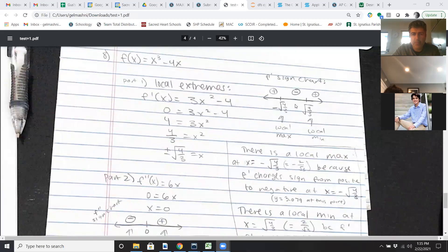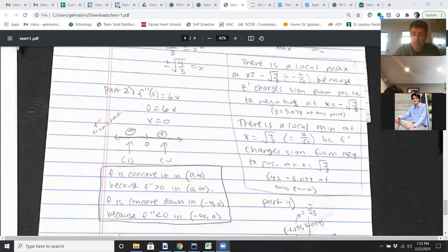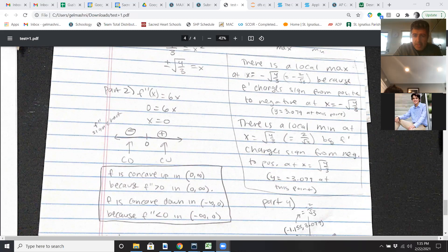Because you have to use the AP style language. Yes, it is a local max at there, blah blah blah. Because f prime changes sign at that place. And likewise for the local min. And of course, you should state the y value as well. What the y value is at that local min or max.